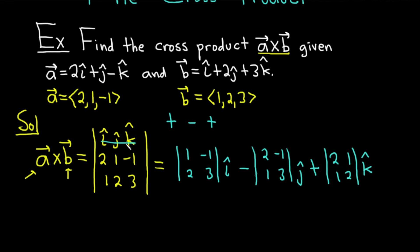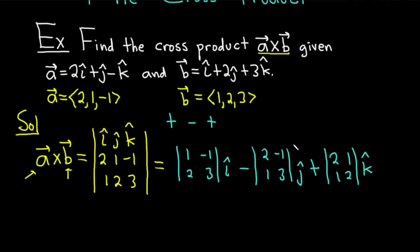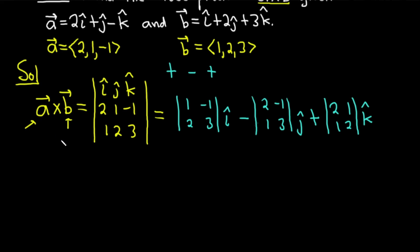Starting with i-hat: cross it out, you have 1, negative 1, 2, 3. Then j-hat: cross out the row and column, you have 2, negative 1, 1, 3. Then k-hat: cross out the row and column, you have 2, 1, 1, 2. The pattern is plus, minus, plus. As a reminder, a 2x2 determinant of A, B, C, D equals A times D minus B times C.